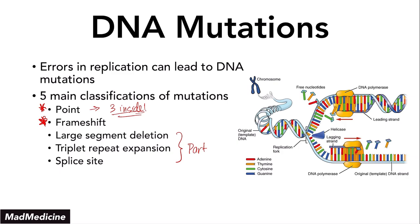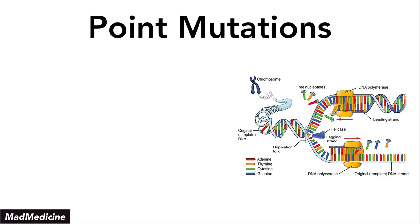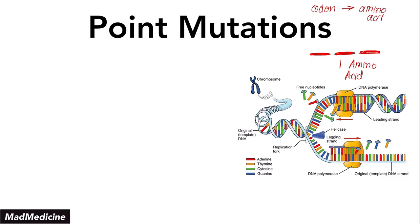Specific mutations can lead to specific types of diseases, and we will also be discussing that in this lecture. Point mutations are essentially a group of mutations classified together. They're called point mutations because they are happening at a certain point in the codon. A codon is essentially three nitrogenous bases in a row, and those three nitrogenous bases code for one amino acid.